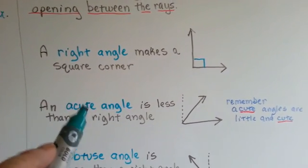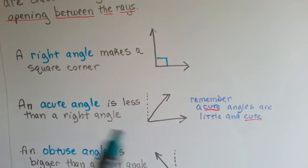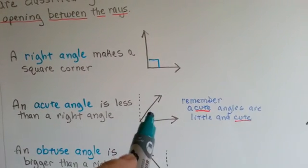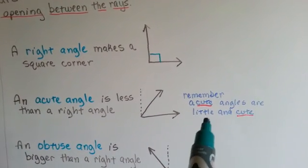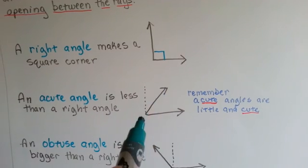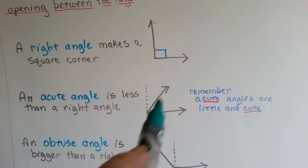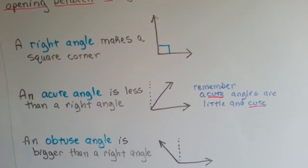You can remember that it's an acute angle because they're acute — the angles are little and cute. They're cute little angles, smaller than a right angle.